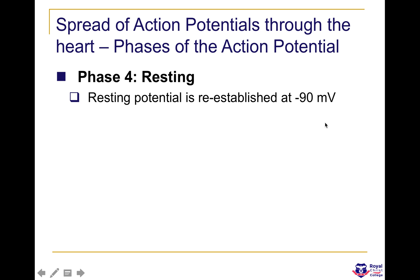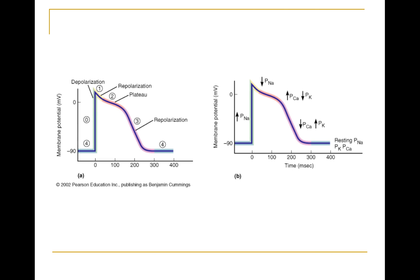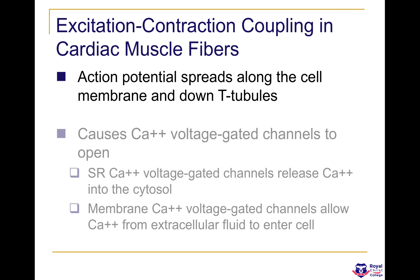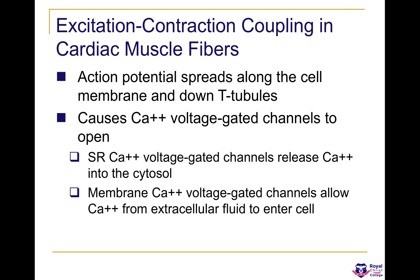Phase four is the resting potential phase, where the resting potential of minus 90 millivolts is re-established. To summarize: there are five phases — zero through four. Phase zero is depolarization, and you need to know what happens in each phase: which channels are open, which are closed, and which ions are involved.